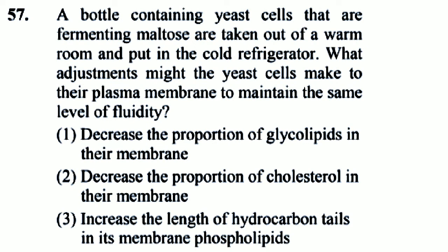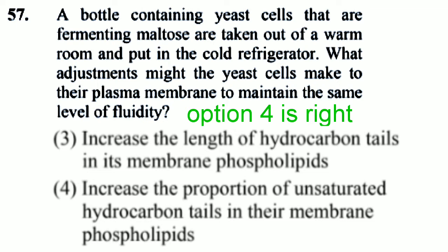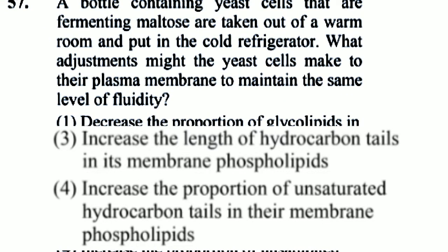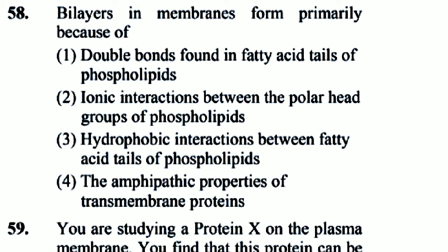Question 57: A bottle containing E. coli cells that are fermenting maltose are taken out of a warm room and put in a cold refrigerator. What adjustment might the E. coli cells make to their plasma membrane to maintain the same level of fluidity? Option 4 is right: increase the proportion of unsaturated hydrocarbon tails in their membrane phospholipids.